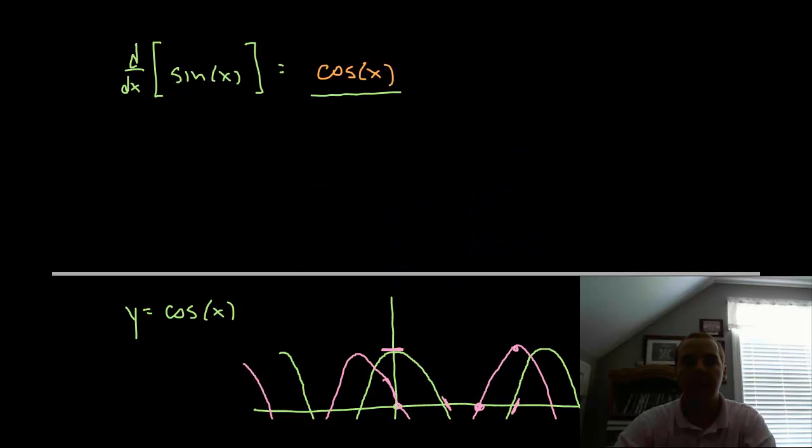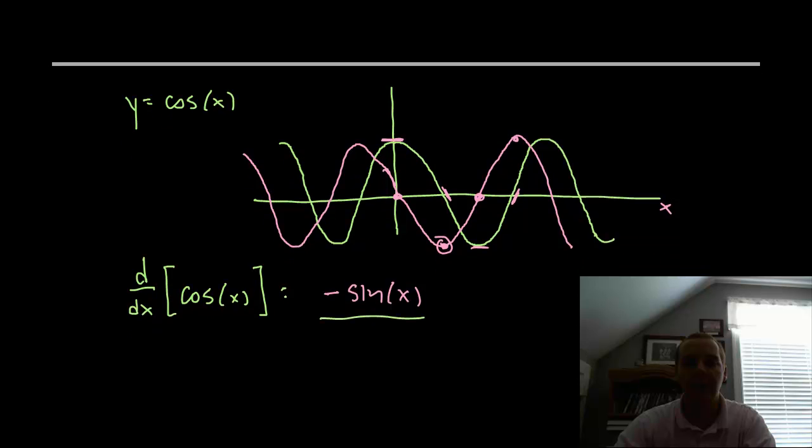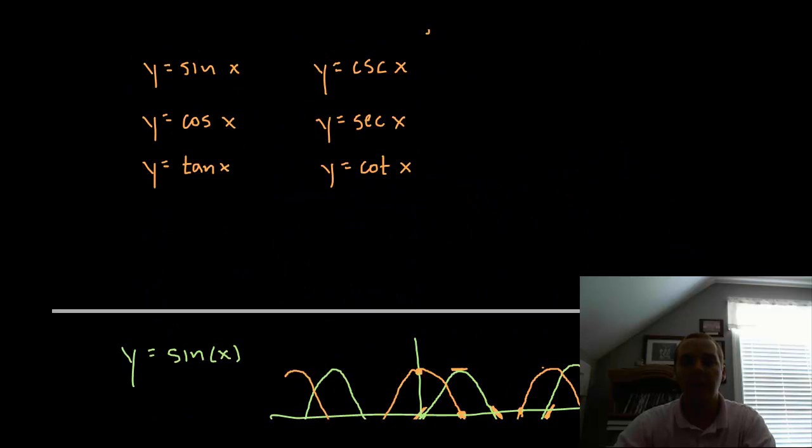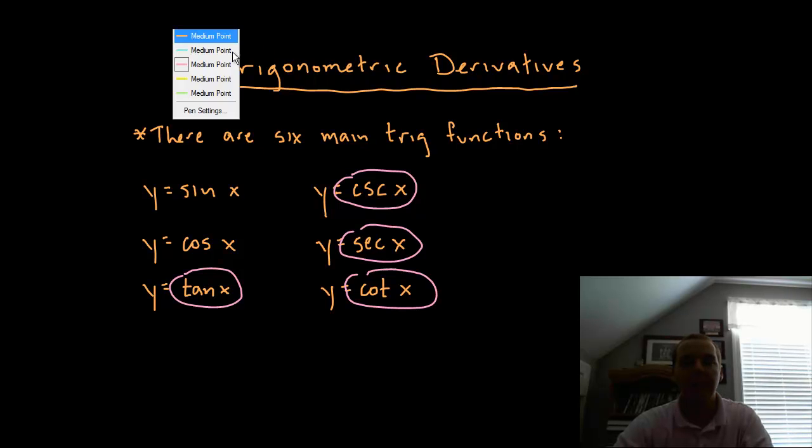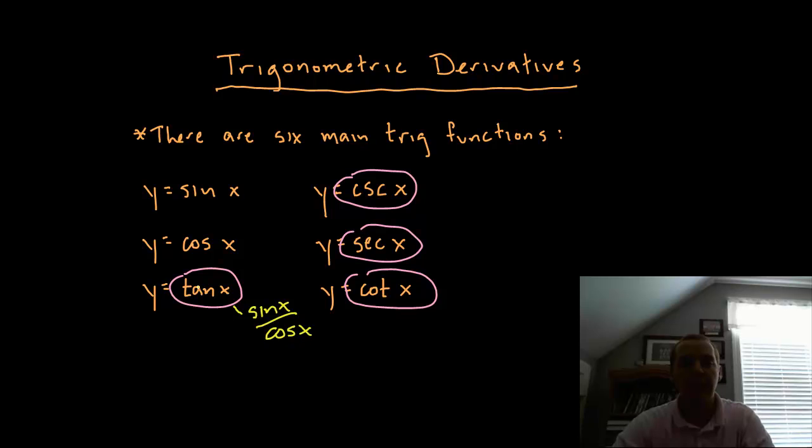Now that's key, having the derivatives for sine and cosine done, because if I go back up here to the original six trig functions, all six of these can be written in terms of sine and cosine. For instance, the tangent function, as we well know, is sine x over cosine x. So I can differentiate tangent by using like the quotient rule for instance, because I have a fraction here with sine over cosine.